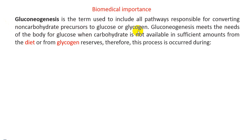Basically, gluconeogenesis is the formation of glucose from non-carbohydrate sources. We know glucose or glycogen normally comes from carbohydrate sources — for instance, glucose from the diet, or from storage glycogen. Therefore, gluconeogenesis involves converting non-carbohydrate precursors to glucose, which is stored as glycogen in the liver.